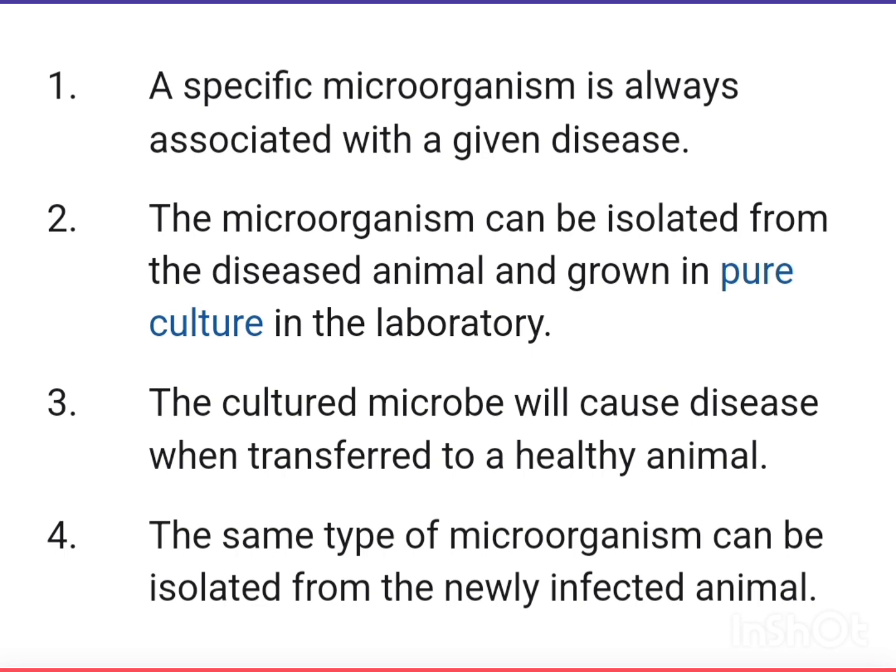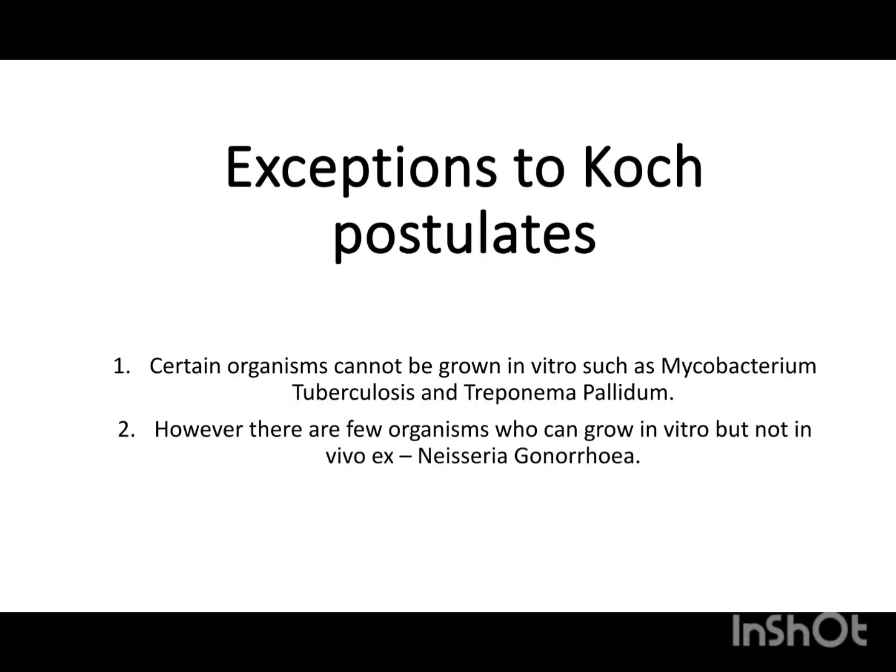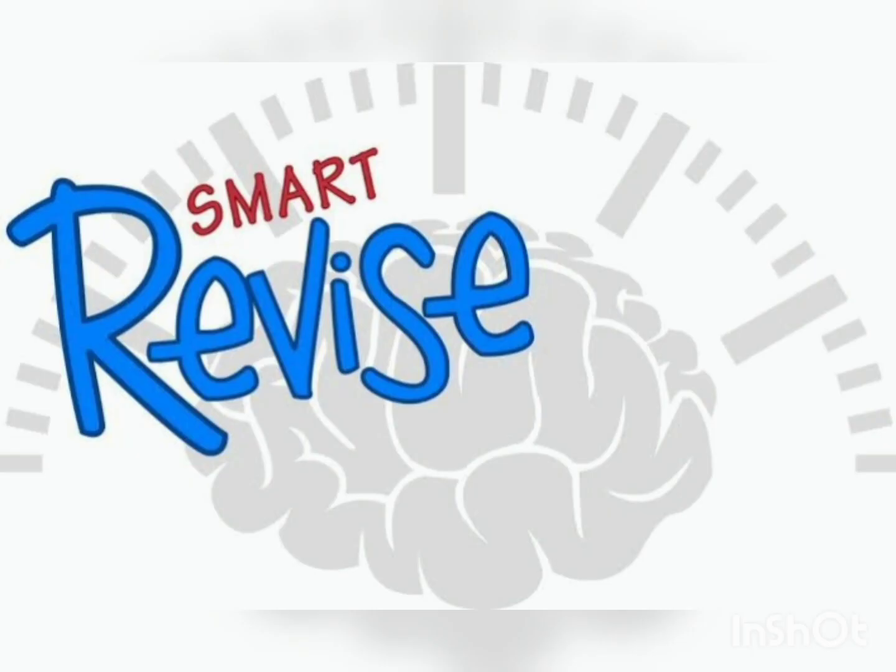Fourth, the same type of microorganism can be isolated from the newly infected animal. There are certain exceptions to Koch's Postulates: an organism cannot be grown in vitro, such as Mycobacterium tuberculosis and Treponema pallidum. However, there are a few organisms that can grow in vitro but not in vivo, for example, Neisseria gonorrhoeae.